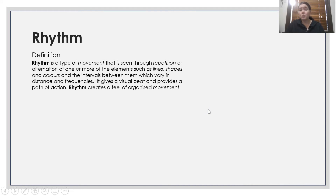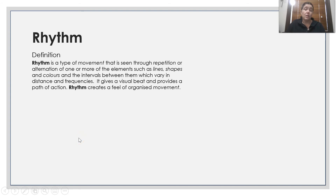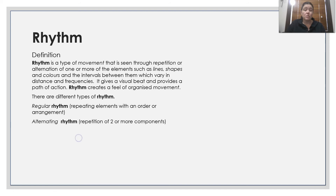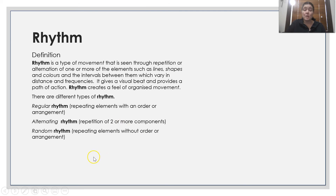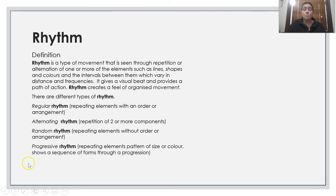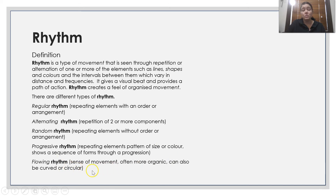Rhythm. Rhythm is a type of movement that is seen through repetition or alteration of one or more elements such as lines, shape and colour, and the intervals between them, which vary in distances and frequencies. It gives a visual beat and provides a path of action. Rhythm creates a feel of organised movement. There are different types: regular rhythm — repeating elements with order or arrangement; alternative rhythm — repetition of two or more components; random rhythm — repeating elements without order or arrangement; progressive rhythm — repeating elements of pattern, size and colour showing a sequence of form through progression; and flowing rhythm — the sense of movement, often more organic and curved or circular.